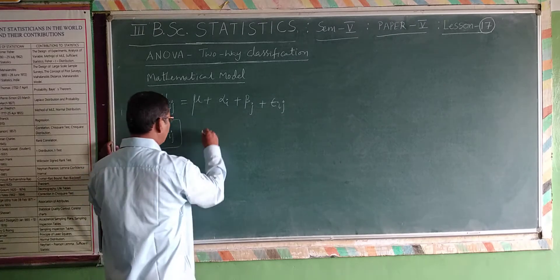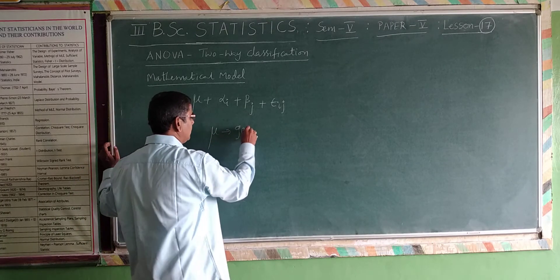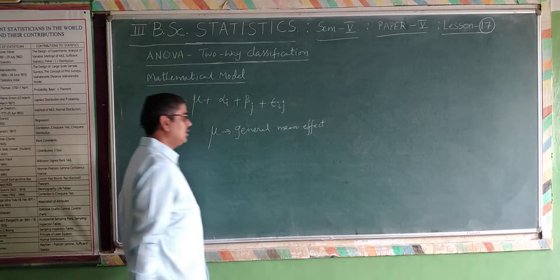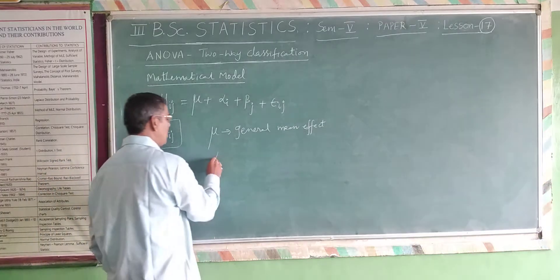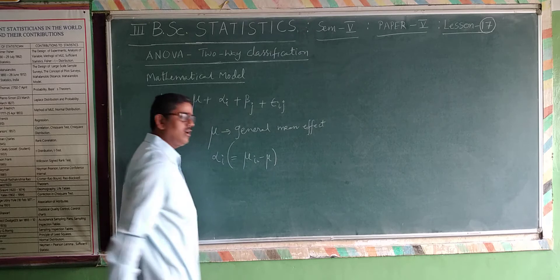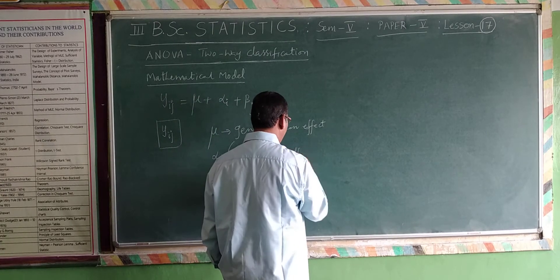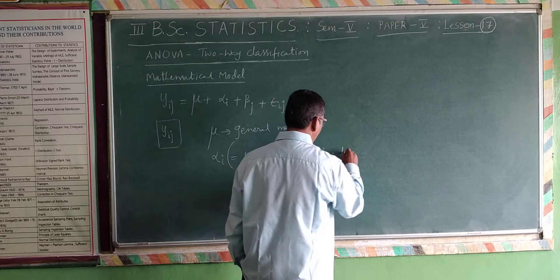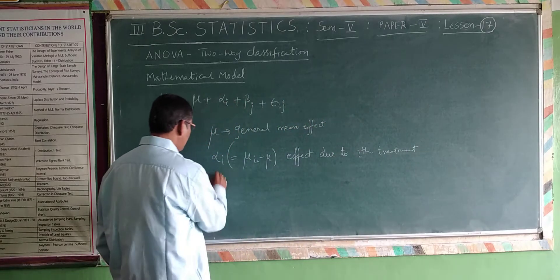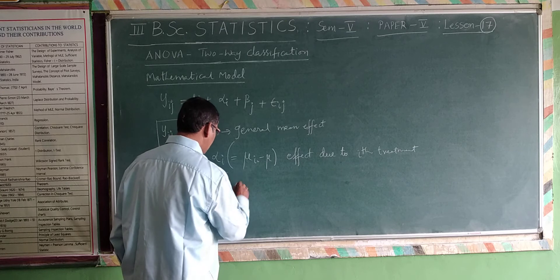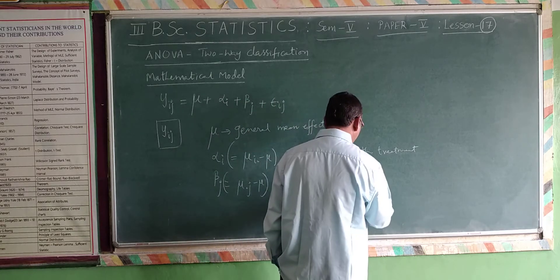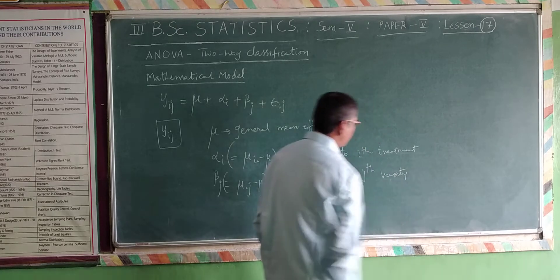Now come to the next term: mu is the general mean effect, similar to what we discussed in one-way classification. Alpha i is defined as mu i dot minus mu, and it is the effect due to the i-th treatment. Beta j is defined as mu dot j minus mu, and it is the effect due to the j-th variety.